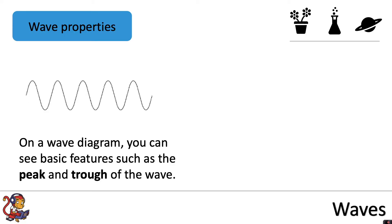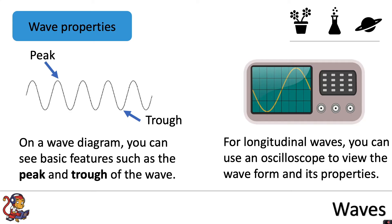On a wave diagram you can see basic features such as the peak and the trough of the wave. For longitudinal waves you can use an oscilloscope to view the waveform and its properties.